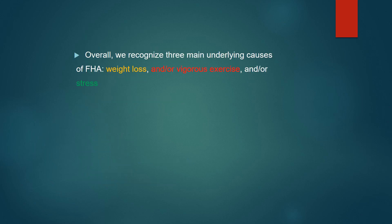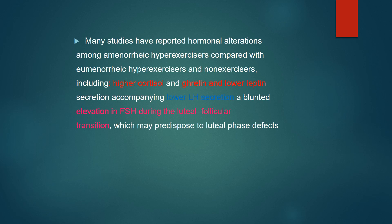Overall, there are three main types: weight loss, vigorous exercise, and stress. Many studies have reported hormonal alterations among amenorrheic hyperexercisers compared with amenorrheic non-exercisers, including higher cortisol. Secretions are blunted with elevation of FSH during the luteal and follicular transition, which may predispose to luteal phase defects.